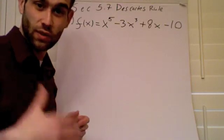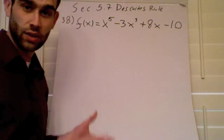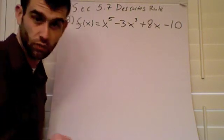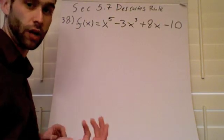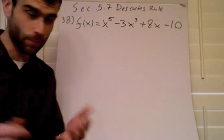The other stuff from 5.7 is very familiar, just the synthetic substitution and division, but Descartes' Rule of Signs was a little bit quick, so I want to go over one problem. This is problem number 38 from page 384. If you want to do this along with me, that's fine. If you want to watch and then do it later, that's fine too.